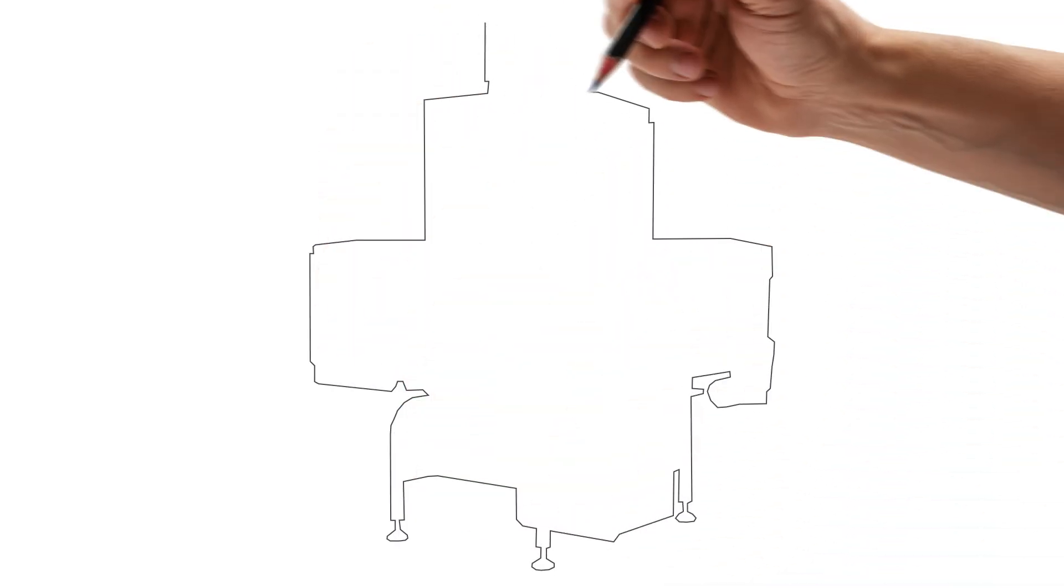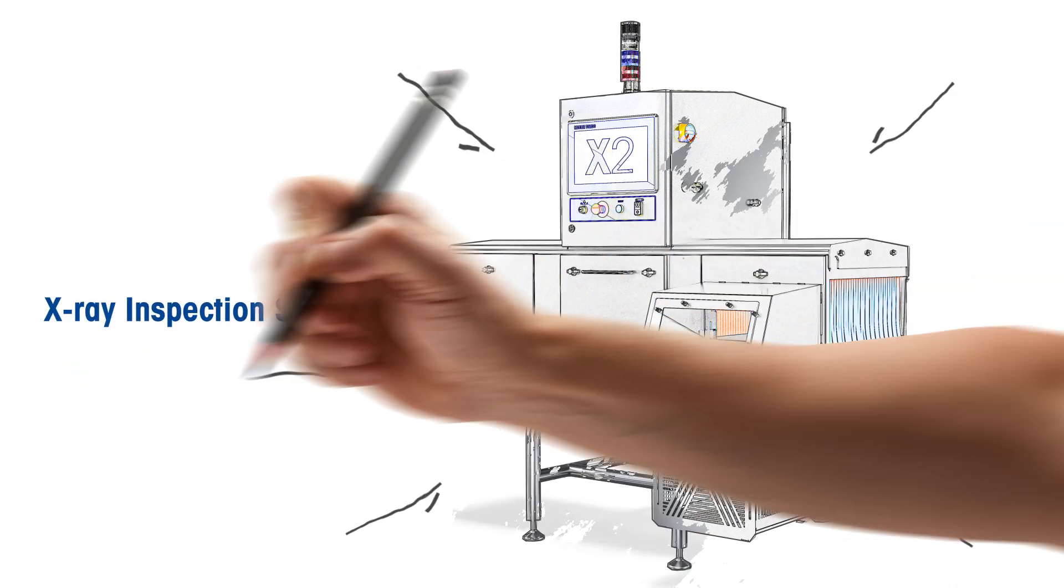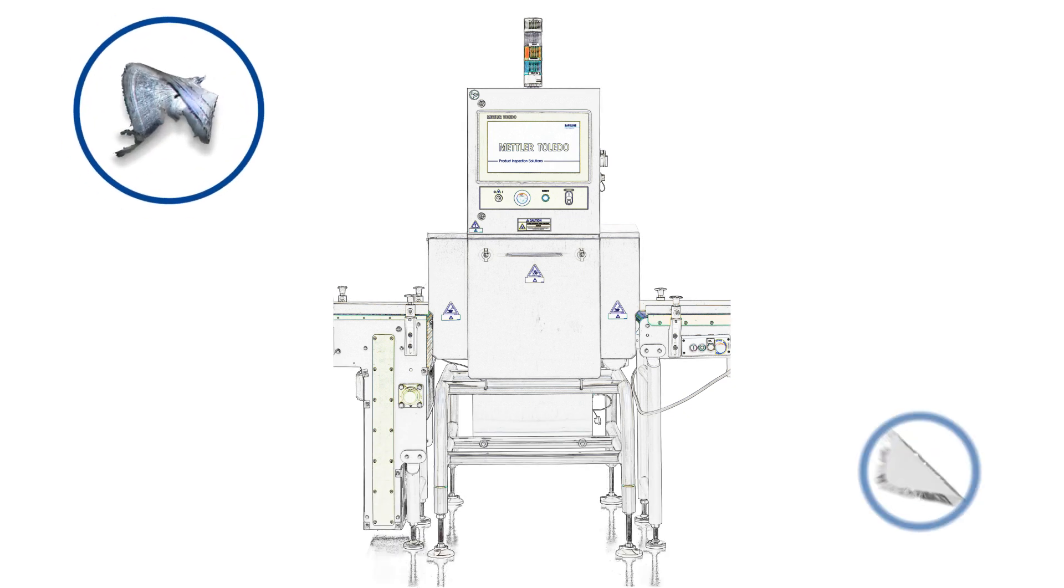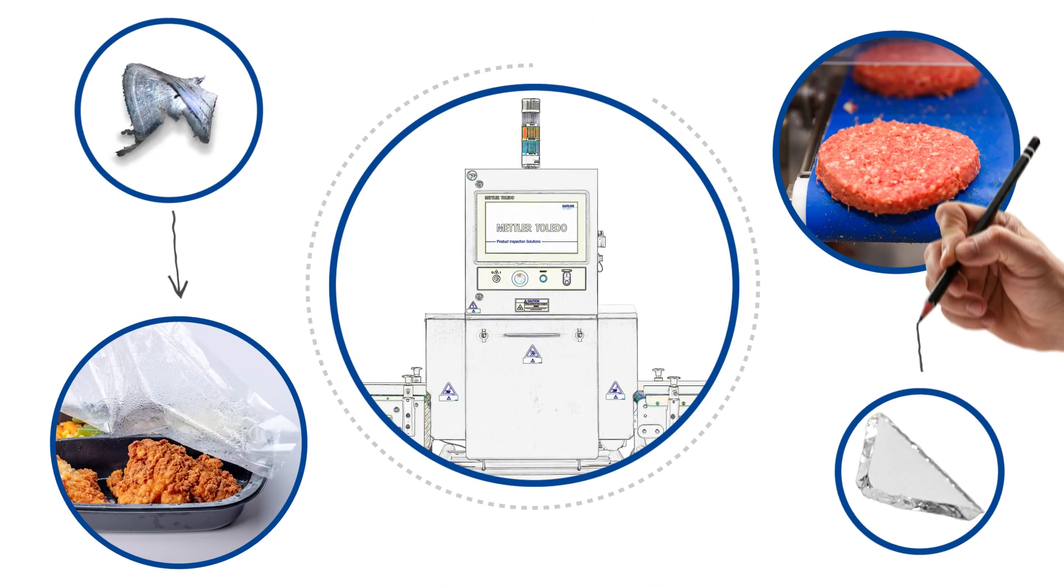Did you know X-ray inspection is used in food production to help improve product safety? X-ray systems identify physical contaminants such as metal, glass, stones, and bone in packaged and unpackaged food products.